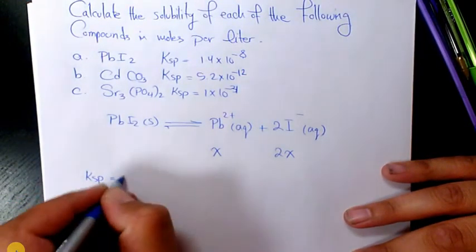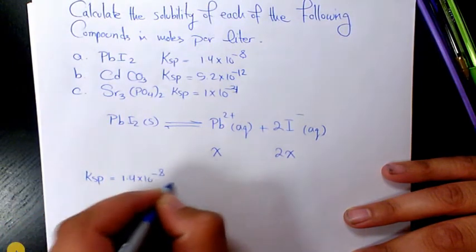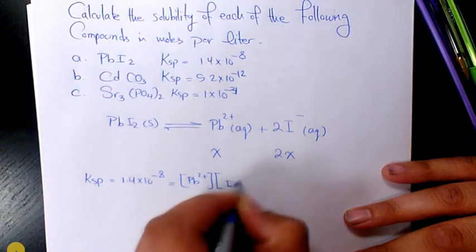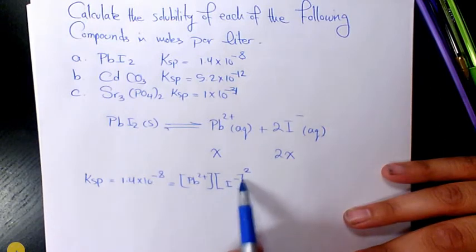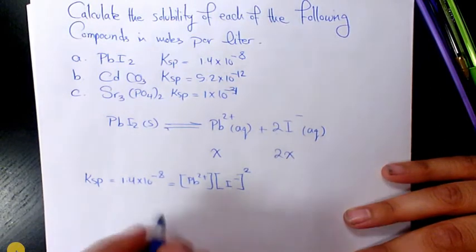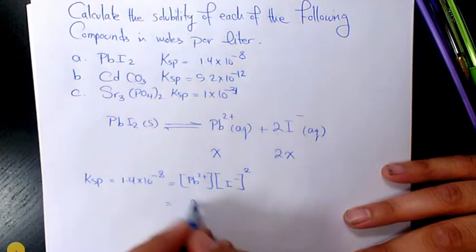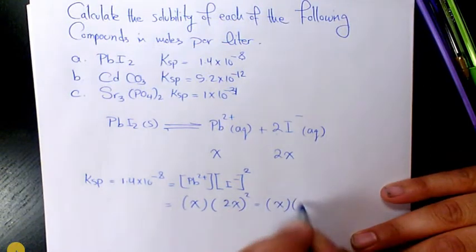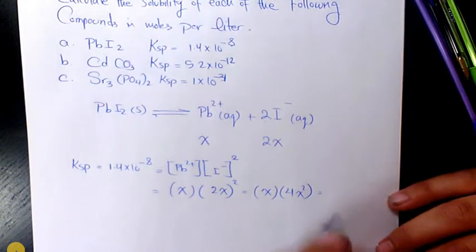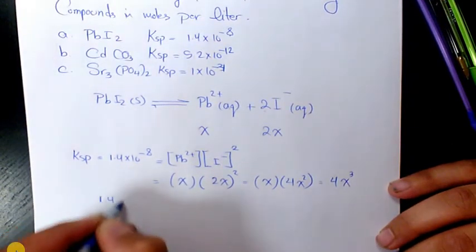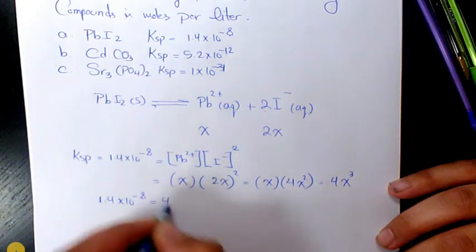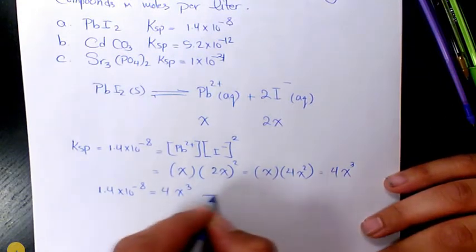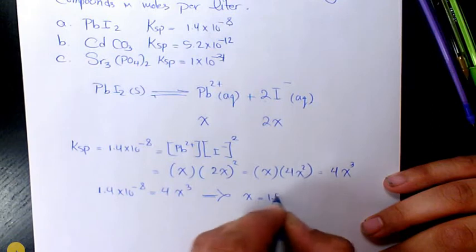So KSP equals 1.4 times 10 to the power of negative 8, which equals the concentration of these ions. The iodide term is raised to the power of 2 because the coefficient is 2. So we have X for Pb²⁺ and 2X for I⁻, giving us X times (2X)² which is X times 4X², so 4X³. Thus 1.4 times 10 to the power of negative 8 equals 4X³.